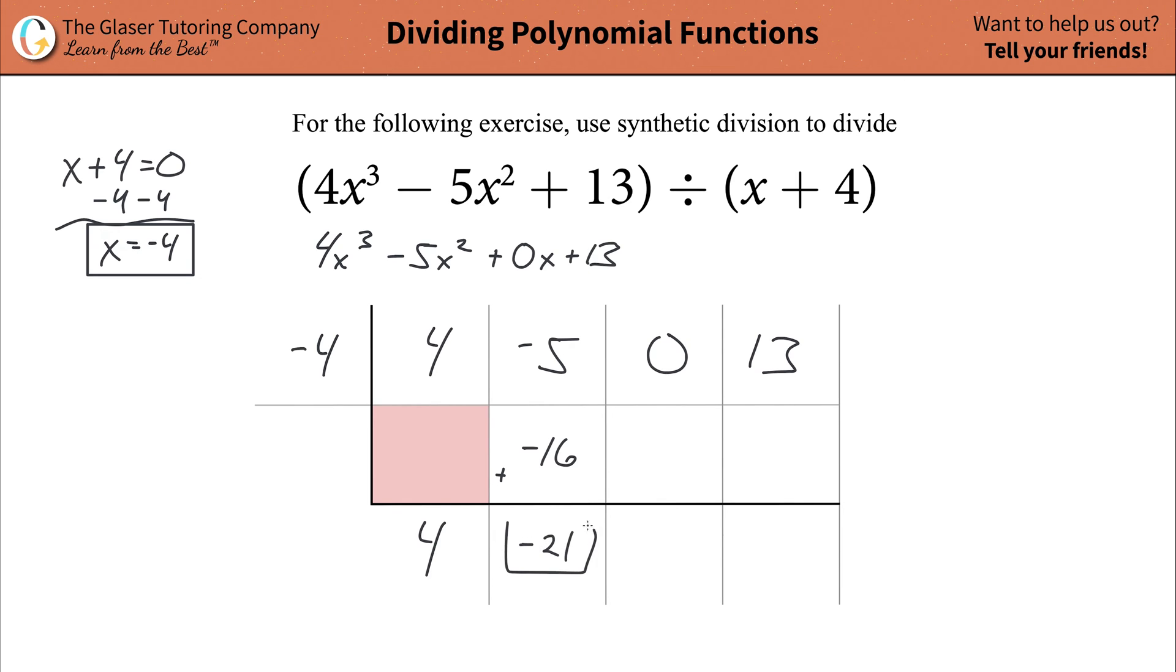And then what you're going to do is you're going to take this term and then multiply it now by the negative four. Negative times a negative is a positive, 21 times four is going to be 84. So you add it all together, that's going to be 84.